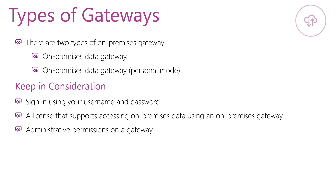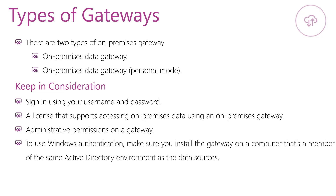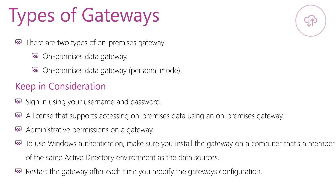You must have administrative permission on the gateway. The user who installs the gateway is the admin of the gateway, and as an administrator you can grant another user permission to co-administrate the gateway. If you are planning to use Windows authentication, make sure you install the gateway on a computer that is a member of the same Active Directory environment as the data sources. It is recommended to restart the gateway after each time you modify the gateway's configuration.